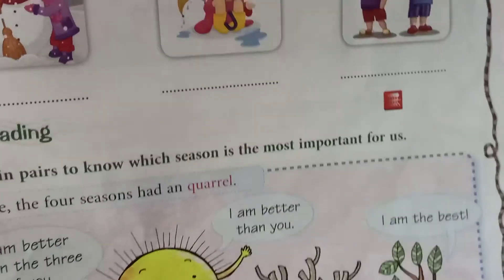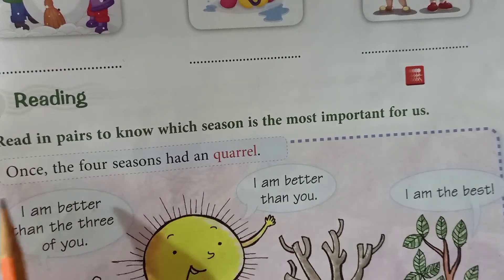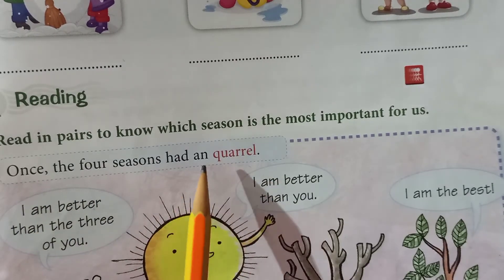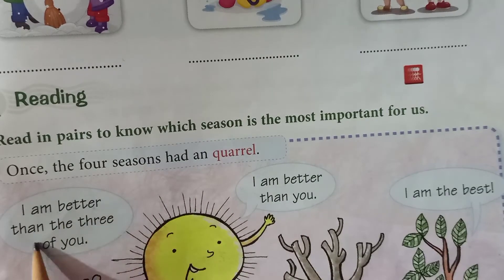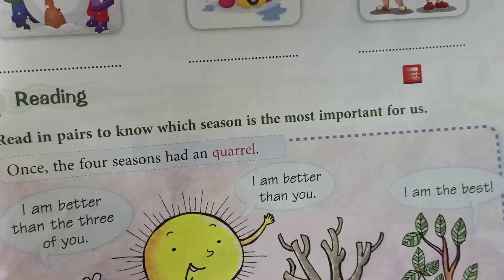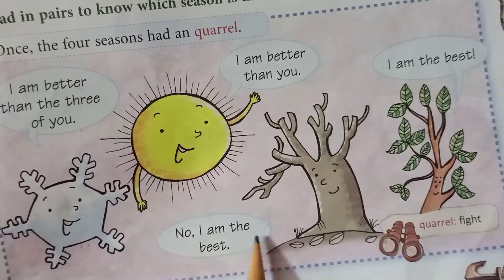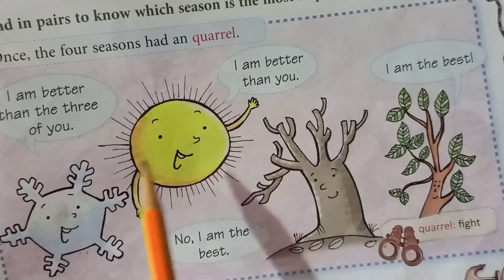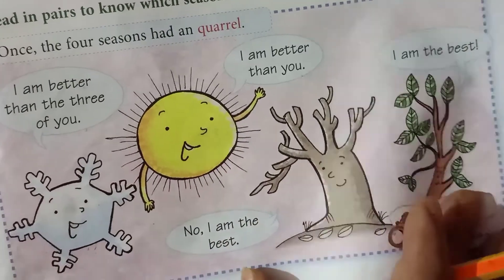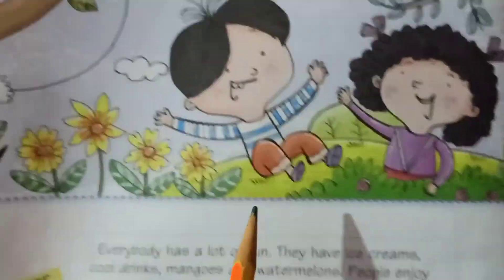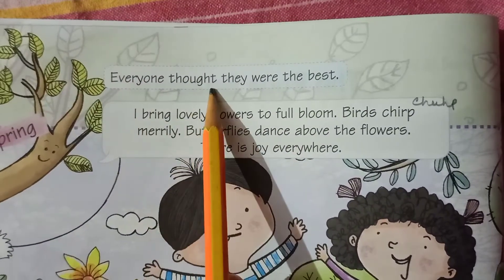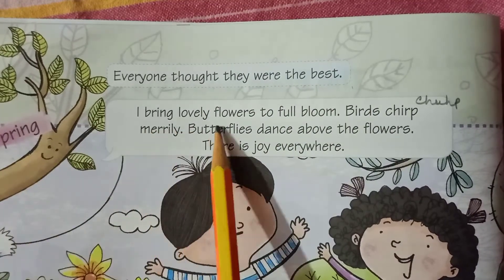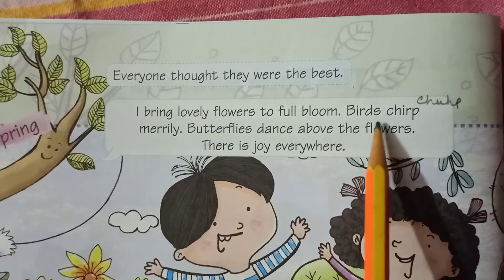Now read in pairs to know which season is most important. As you are not in school, read at home alone. 'Once the four seasons had a quarrel' — quarrel means fighting. 'I am better than all three of you.' 'No, I am the best.' The four seasons are quarreling. Now go to the next page.